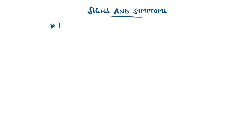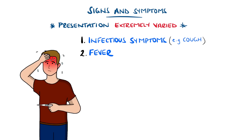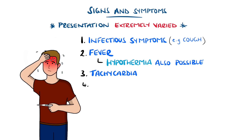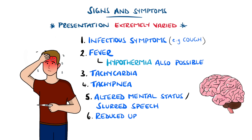Sepsis has an extremely varied presentation, usually featuring some source of infection with its own features — for example, a cough in pneumonia. A fever is usually present, but it does not have to be; in the elderly, this may be absent. Remember that hypothermia may also be a manifestation of sepsis. Other possible features include tachycardia, tachypnoea, altered mental status or slurred speech, and a reduction in urine output.